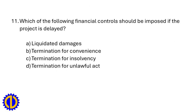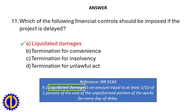Which of the following financial controls should be imposed if the project is delayed? a. Liquidated damages, b. Termination for convenience, c. Termination for insolvency, d. Termination for unlawful act. Answer: a. Liquidated damages. Reference: IRR 9184 — liquidated damage is an amount equal to at least one-tenth of one percent of the cost of the unperformed portion of the works for every day of delay.